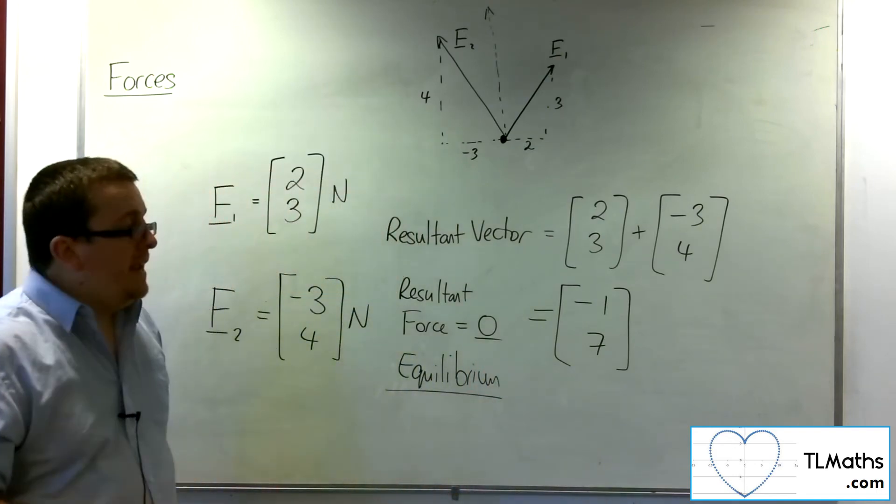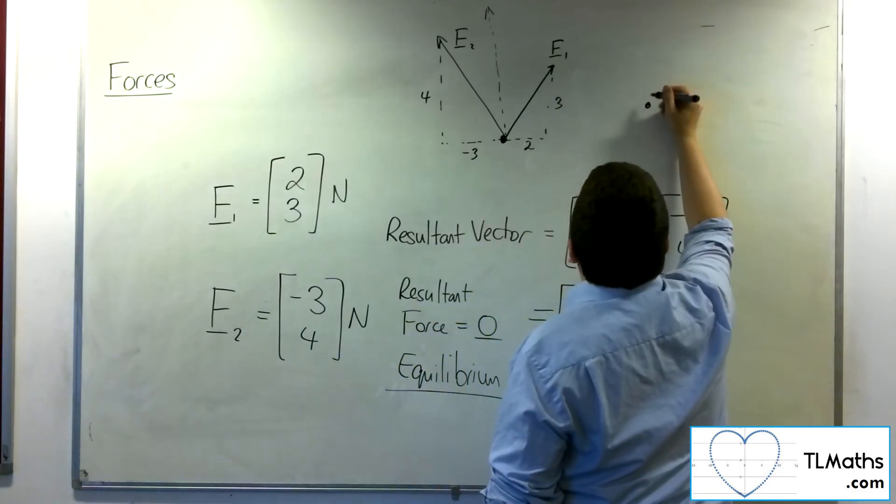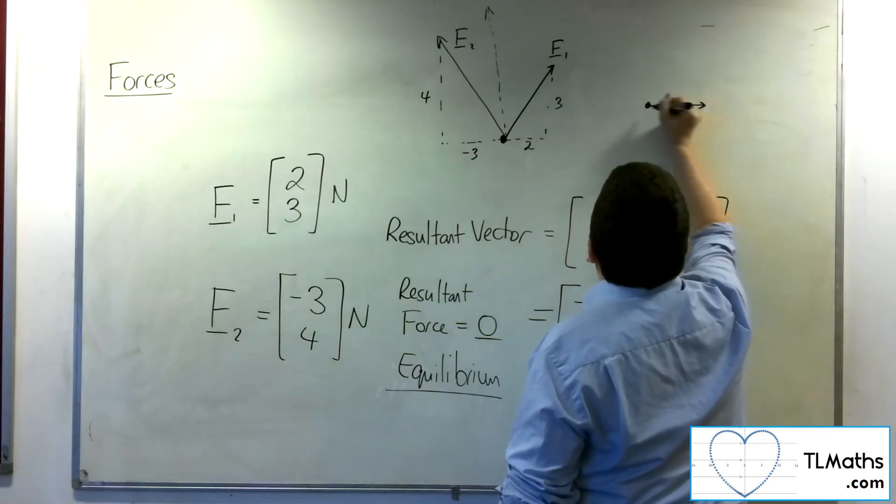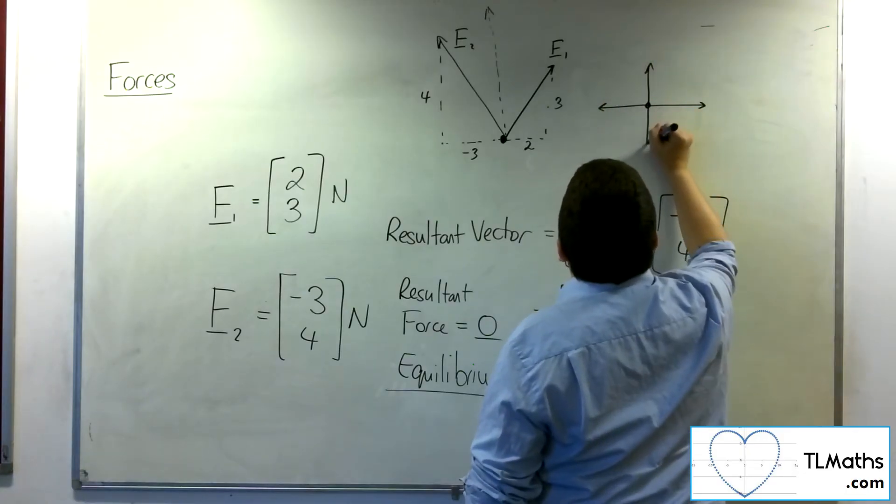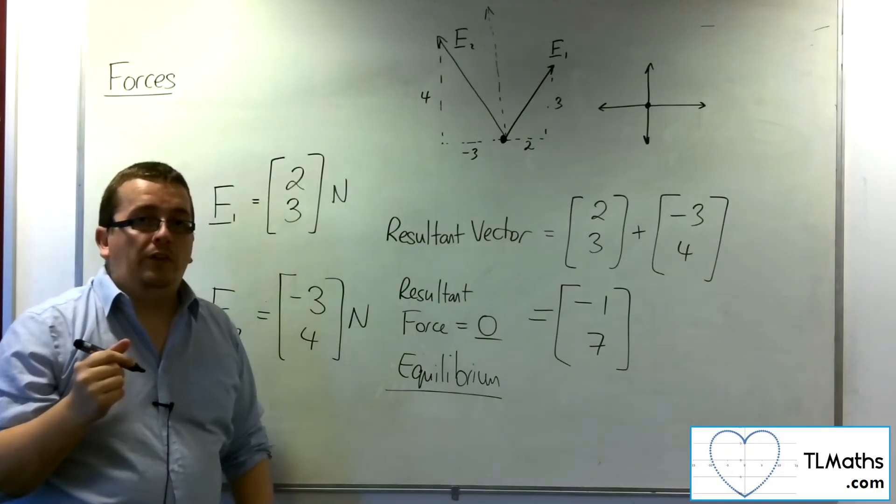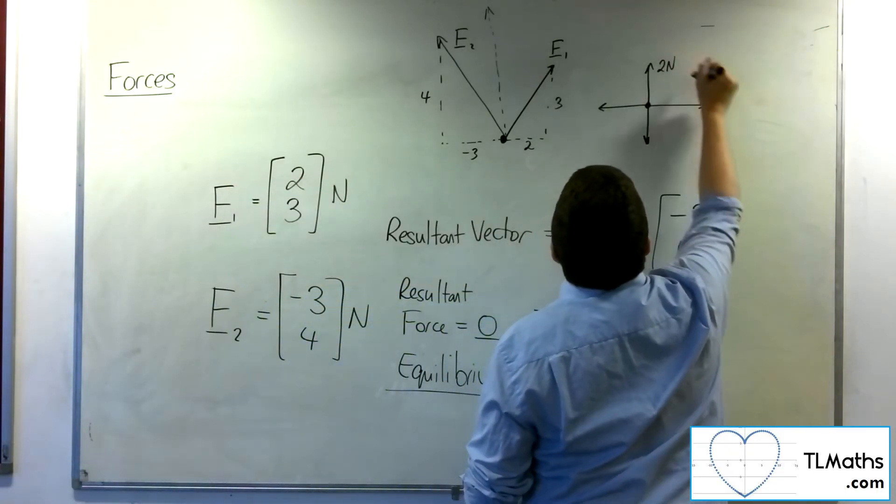So what that would mean is, effectively, you can imagine that you have a particle that is being pulled one way, being pulled another way, another way, and another way, and these forces are perhaps all acting with, let's say, 2 newtons, 2 newtons, 2 newtons.